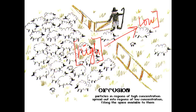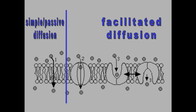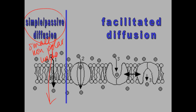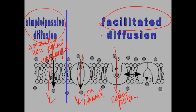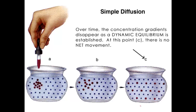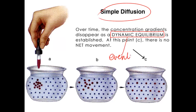Simple or passive diffusion doesn't take any energy — things move straight across the phospholipid bilayer when they're small, non-charged, and non-polar. Facilitated diffusion also requires no energy since you're moving from high to low; examples include ions, simple sugars, and polar molecules like water that need a little help. A great example of simple diffusion is putting a drop of dye in a beaker — eventually the dye spreads out evenly, moving from where there's a high concentration to where there's a low concentration until equally distributed.